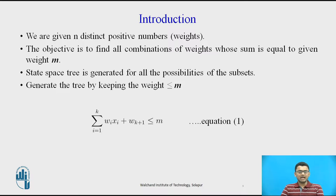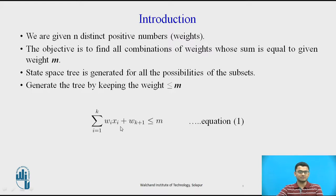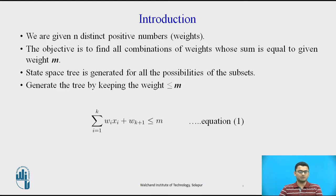When we start adding nodes to the tree to check the weight of the subset, we keep the weight of the subset less than or equal to m. If any path in the tree is crossing over m — that is, the weight is going beyond m — we cancel that path and backtrack the solution to the previous node.